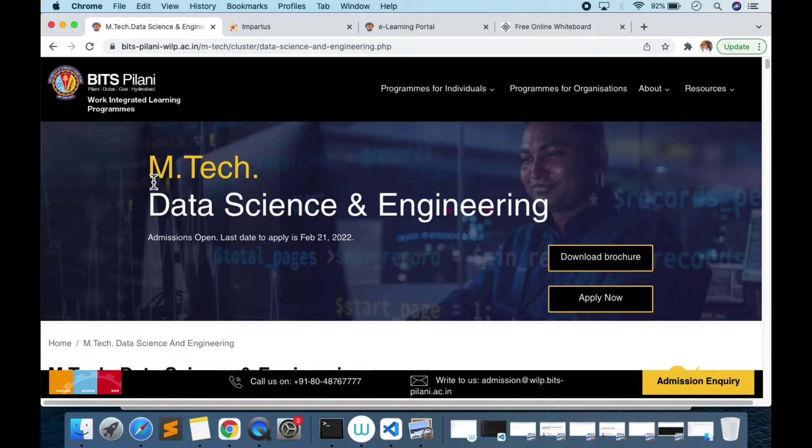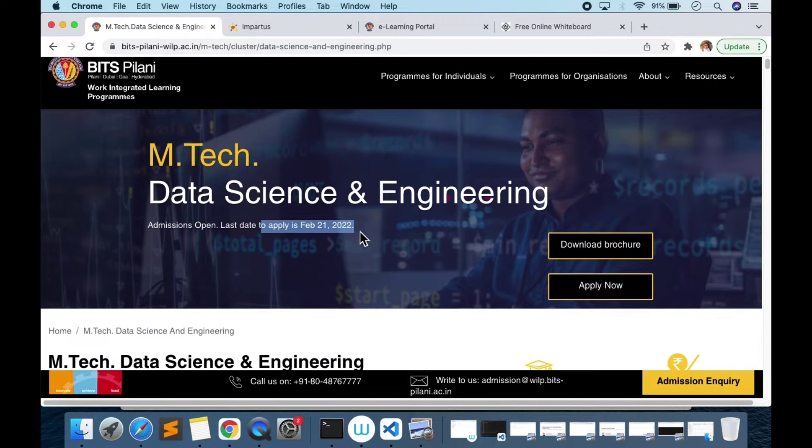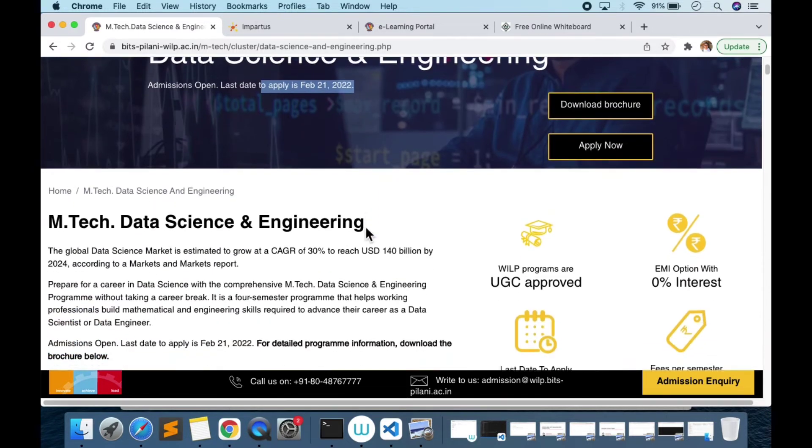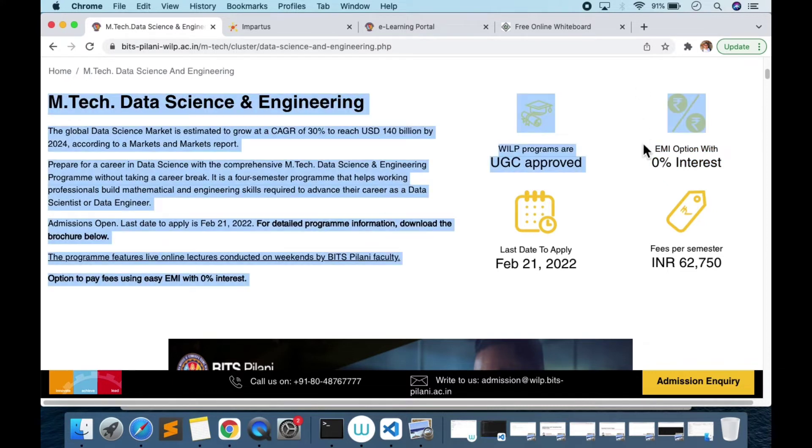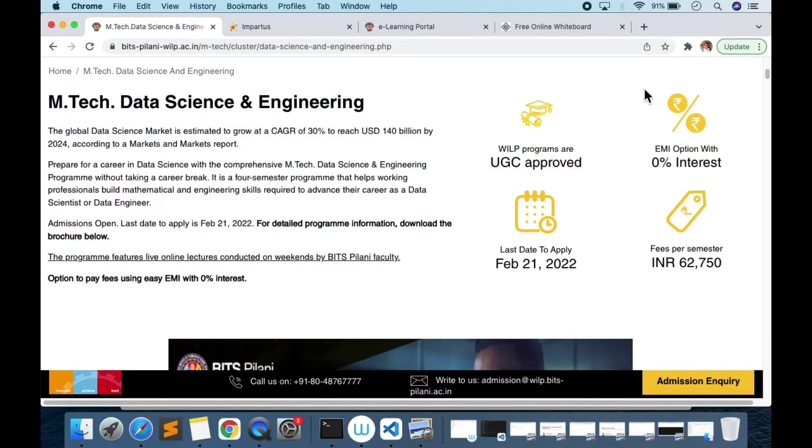With this let's move to the course structure and fees. I'll switch to the portal website where the admission is published. You can see BITS Pilani M.Tech Data Science Engineering. Since I'm making in Feb you still have time for the application. This is a new update here - UGC approved. This program has been approved by UGC and another is EMI option with zero percent interest. If you have some issues with finance and still want to move forward with this degree you can take it. I don't advise to take loans but it's an investment if you think it's helpful for you.